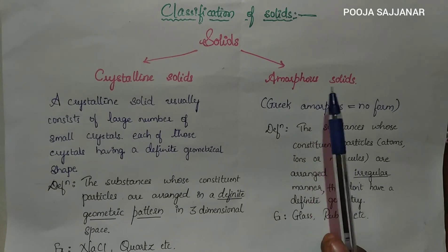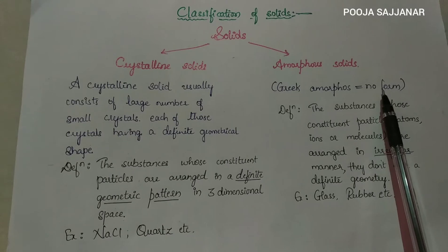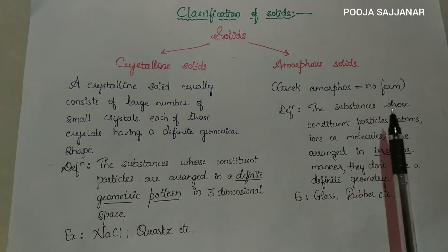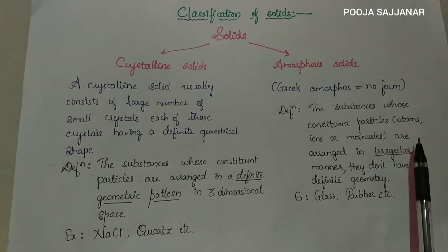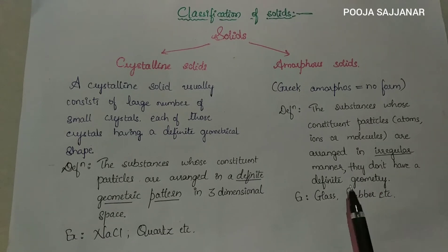The second type is amorphous solids. In Greek, amorphous means there is no form. No form means there is no geometrical shape for amorphous solids. The substances whose constituent particles are arranged in an irregular manner — they don't have a definite geometry. For example, glass, rubber, etc.